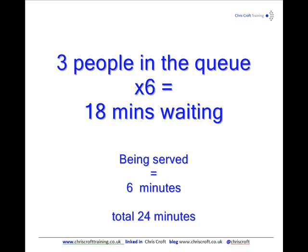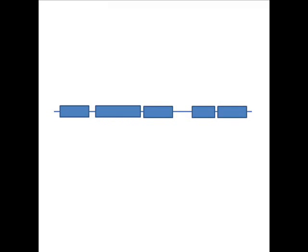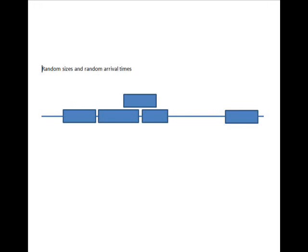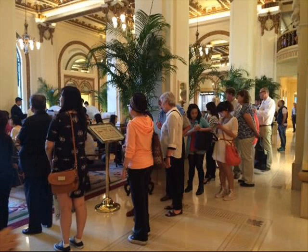So why is there a queue if they've got the ability to cope with 10 people per hour and they've only got 8 per hour arriving? The answer is the randomness of the arrivals. They won't be equally spaced, so every now and then you'll have a bad patch and a queue will build up, and then gradually you'll get on top of it and the queue will go back down. But overall, it means on average you do have a queue length of 4.